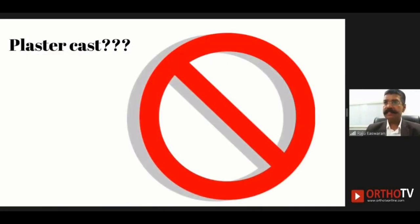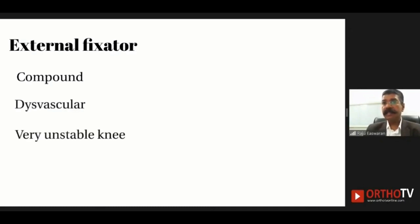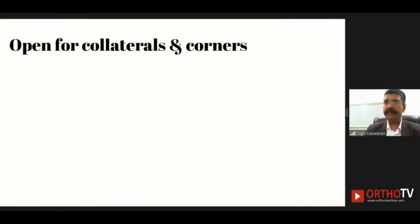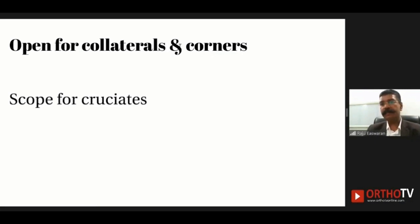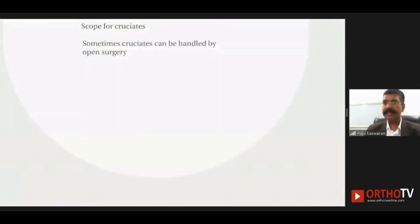Casting is no longer in vogue. Use of an external fixator may be considered when the injury is open or when there is a vascular injury and the knee is very unstable, for initial fixation. Open surgery is recommended for collaterals and corners, while arthroscopic surgery is recommended for cruciates — though it is worth remembering that the cruciates can also be handled by open surgery.